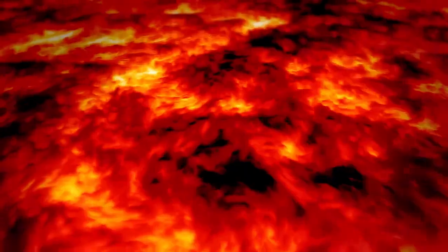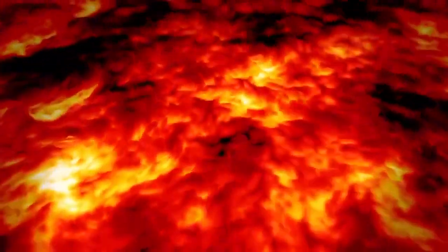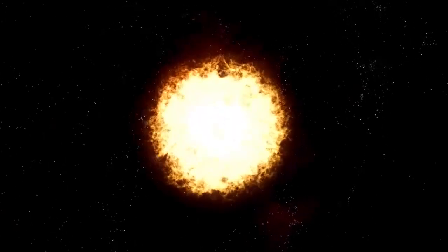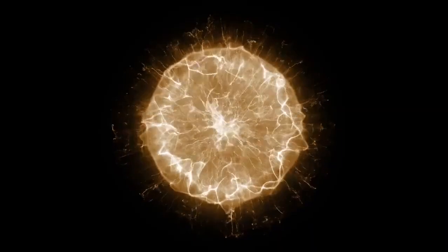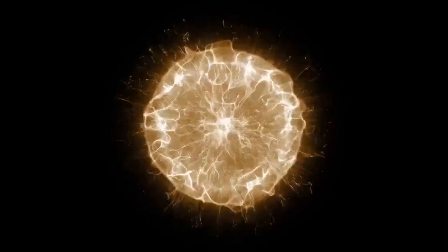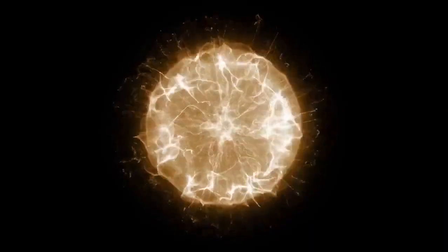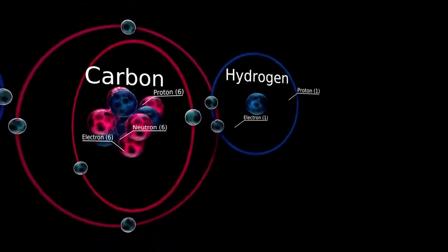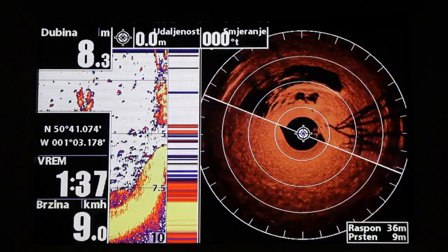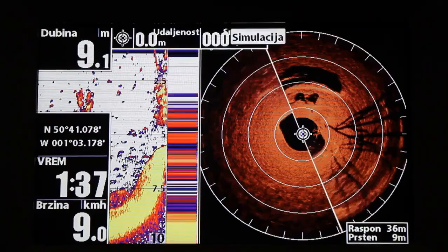Betelgeuse's variability is particularly pronounced due to its immense size and advanced stage of evolution. As a red supergiant, it has already exhausted the stable hydrogen burning phase that defines the lives of smaller, less massive stars. Its core is now dominated by helium, with fusion occurring in surrounding shells of hydrogen and eventually heavier elements. The fusion of helium into heavier elements, such as carbon and oxygen, releases less energy than hydrogen fusion, making radiation pressure more erratic and less effective at countering gravity.